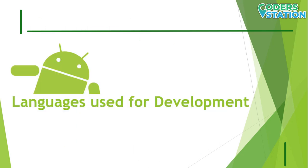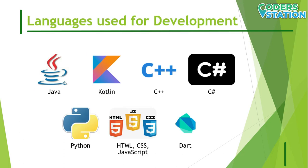Languages used for Android app development: The first is Java. Java was the official language for Android app development but has since been replaced by Kotlin. Nevertheless, it remains one of the most used languages, with many apps in the Play Store built with Java. It is also the most supported language by Google.